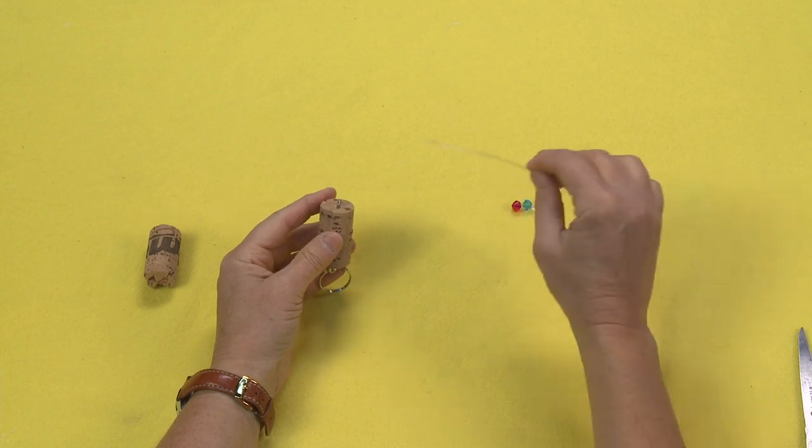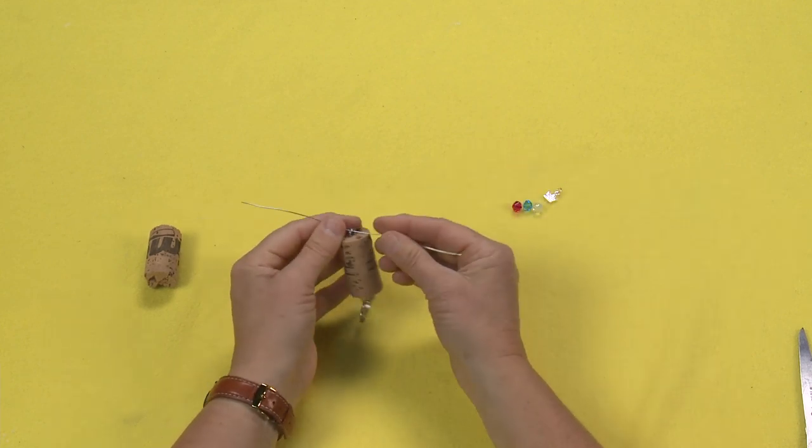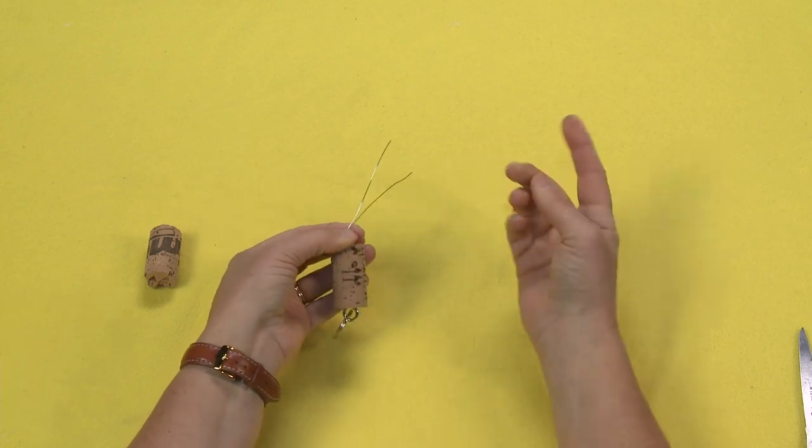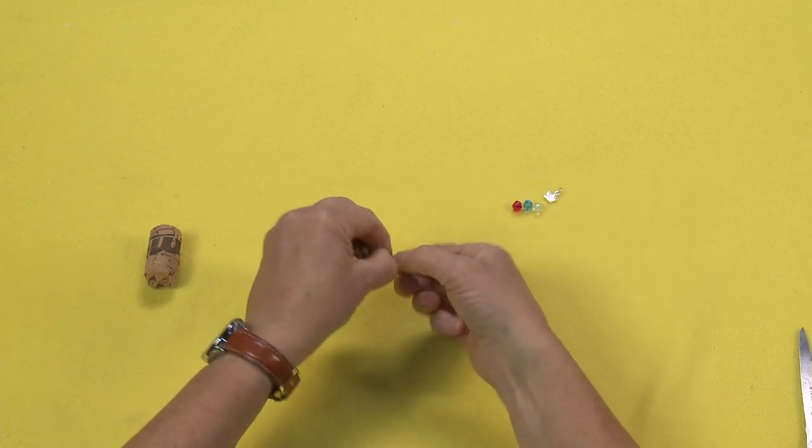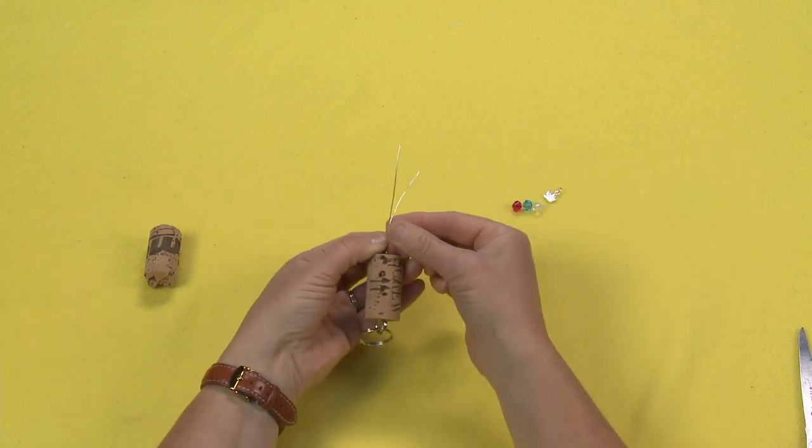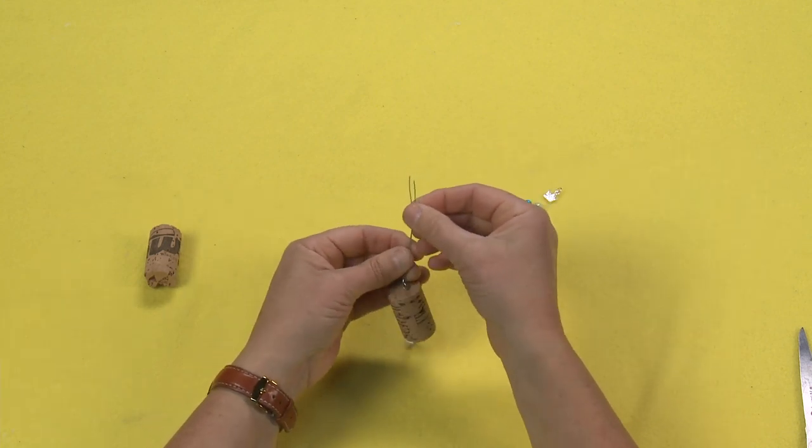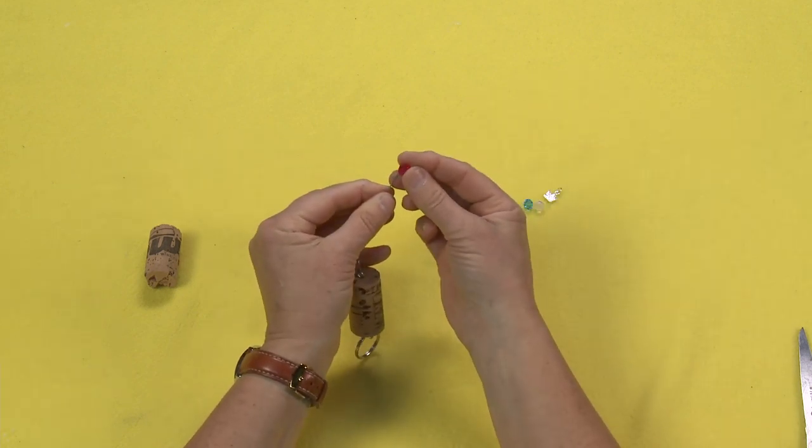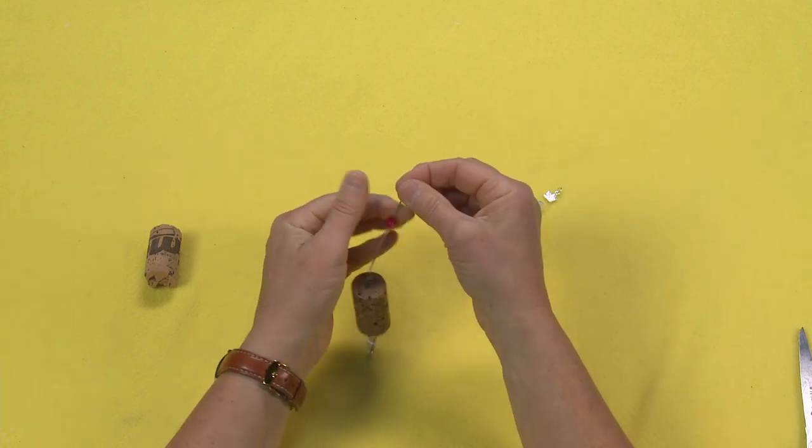I'm going to take my 24-gauge wire and thread it through the screw eye. I'm going to fold it in half and give it a little twist to lock it in place. Then I'm going to pull the ends together and string the beads over both wires.